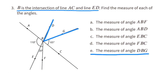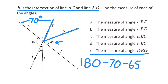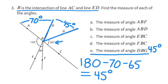E: the measure of angle DBG. We already know angle ABD is 70 degrees and angle GBC is 65 degrees. So 180 minus 70 minus 65 equals 45 degrees. The measure of angle DBG is 45 degrees.